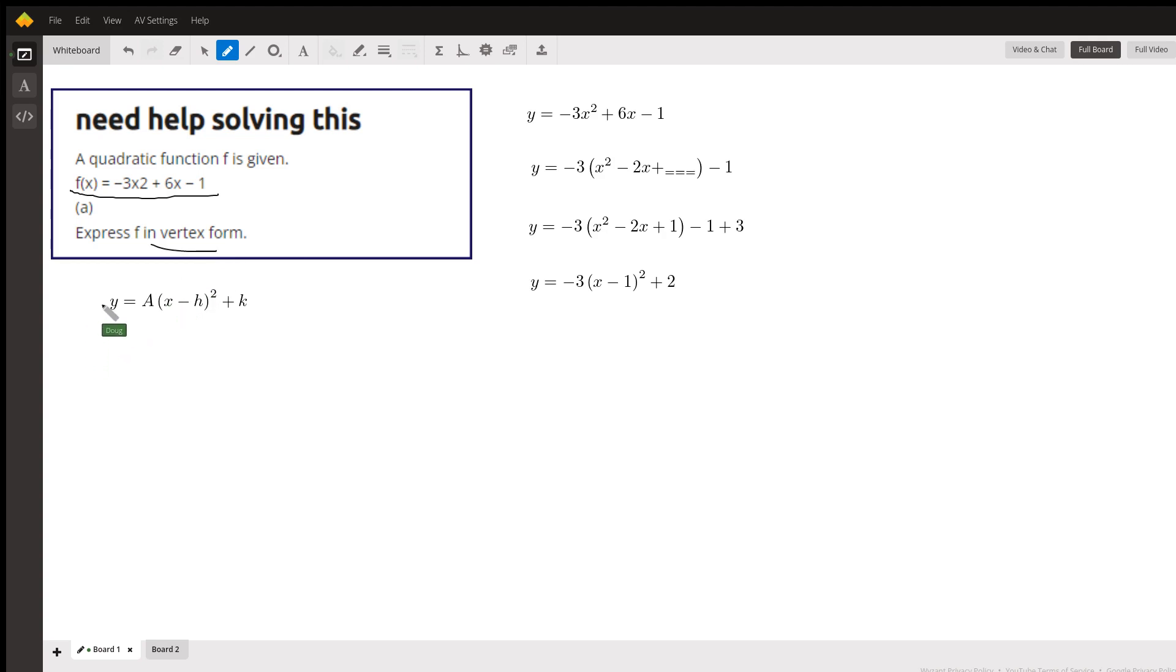Here's what vertex form looks like. If you have it written this way, it's easy to tell that the vertex is located at the point with coordinates H, K. So here's the technique.